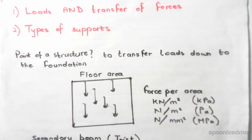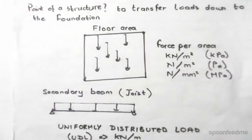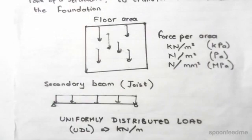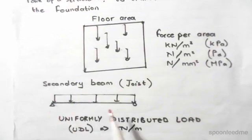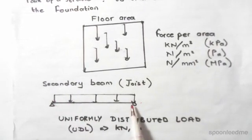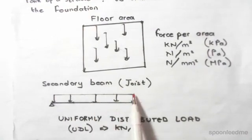So, sitting below the floor area, we have the secondary beam or a joist. Let's say we have this beam right here. The beam has two supports, the triangle and the circle, and that's the beam. Now, the floor area exerts a uniformly distributed load, which is this one over here.